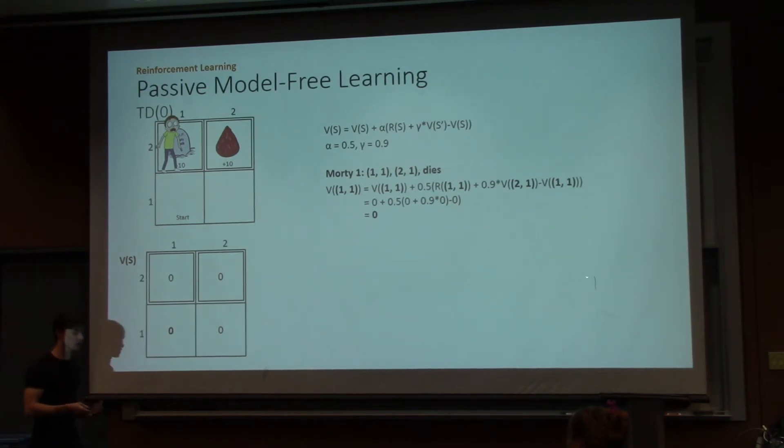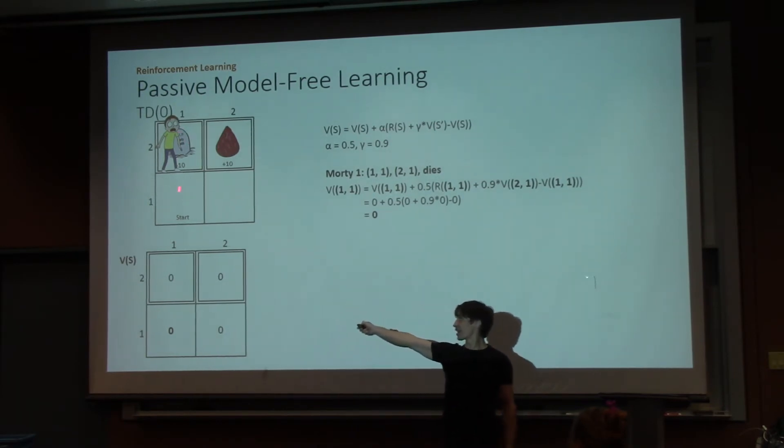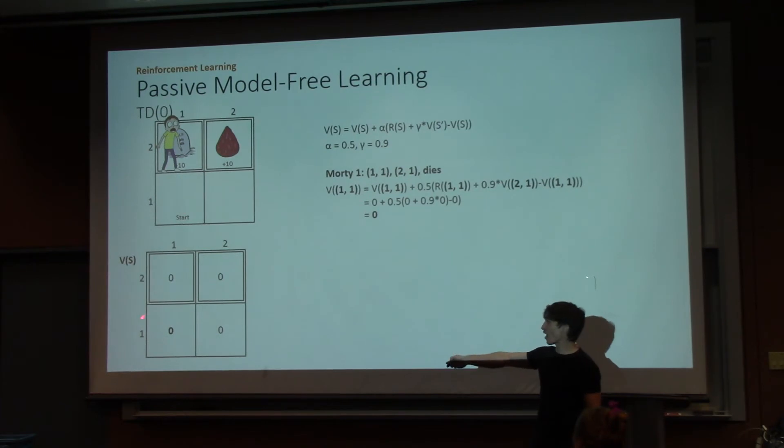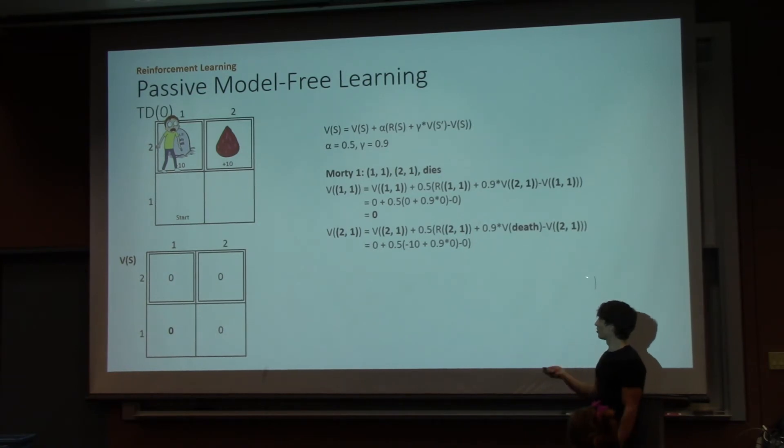So, as he leaves a state, we get more information, and the state that he just left gets updated. So, if he were to not die here, and he were to end up back in state 1-1, he would now have new information about that state, even though his run through this world hasn't ended yet. So, again, V(2-1) to death, we'll do the same thing, plug the numbers into the equation, get a value, and die.